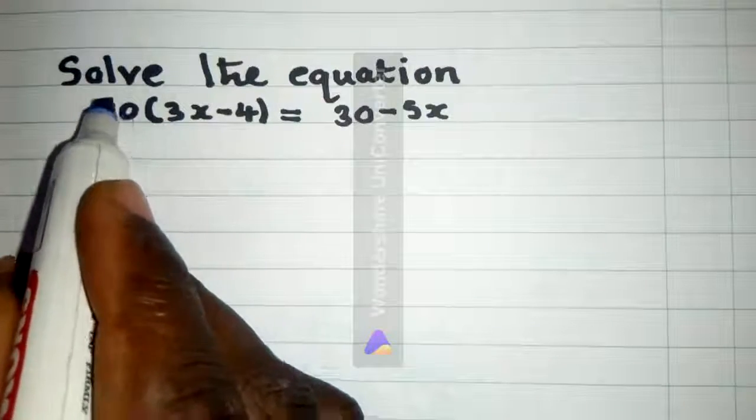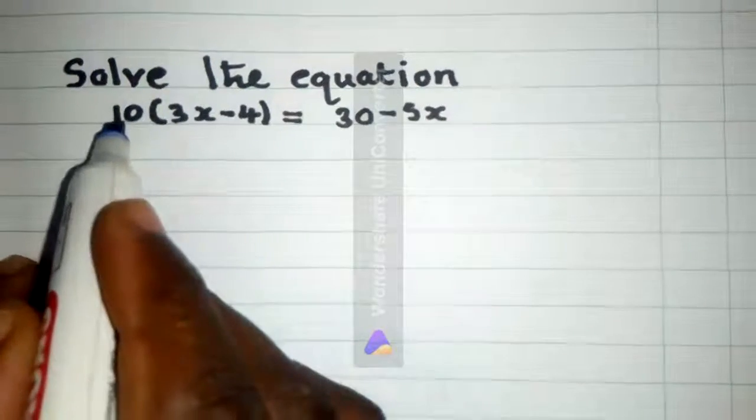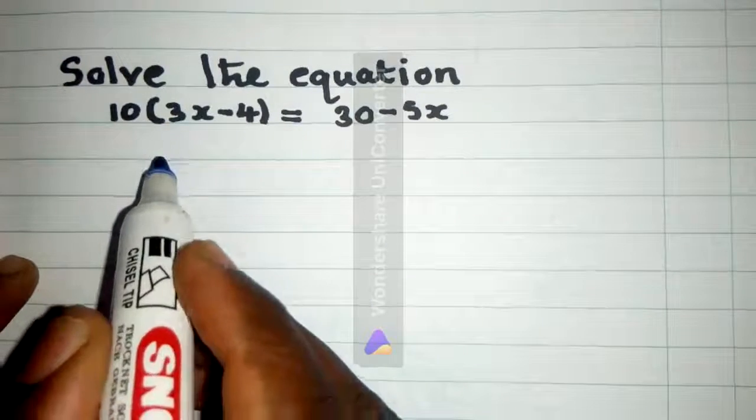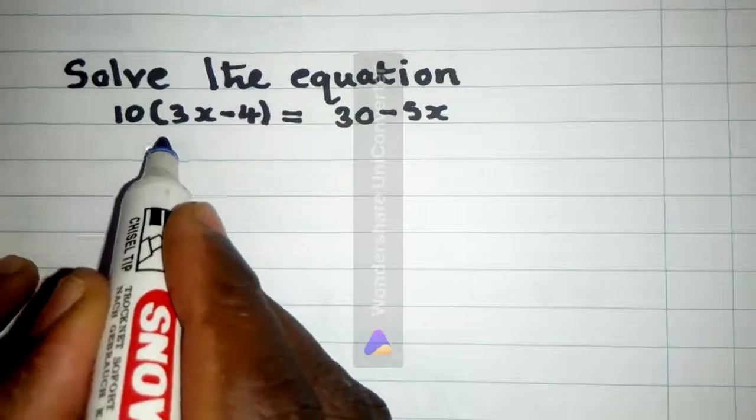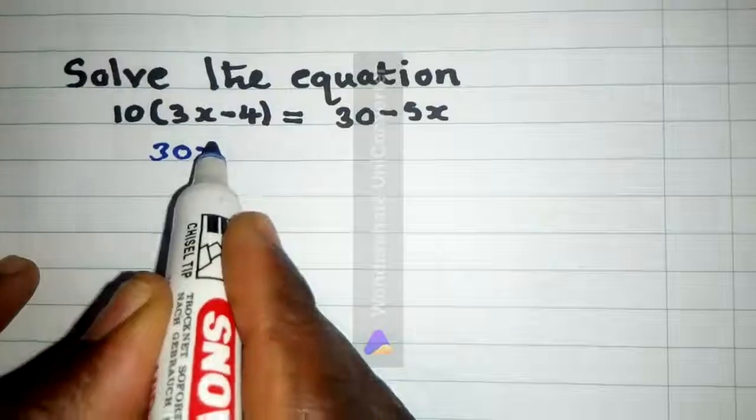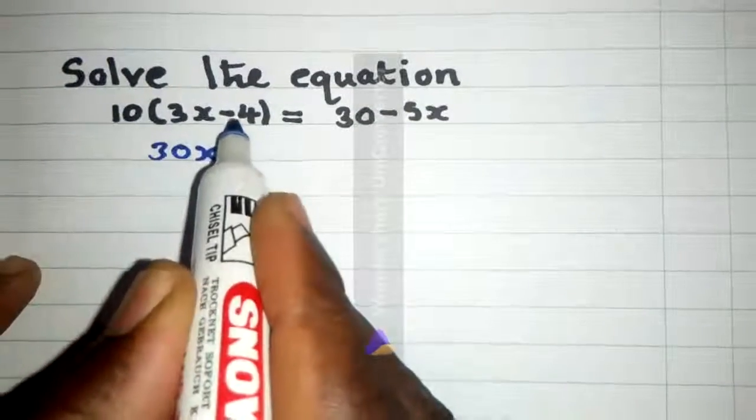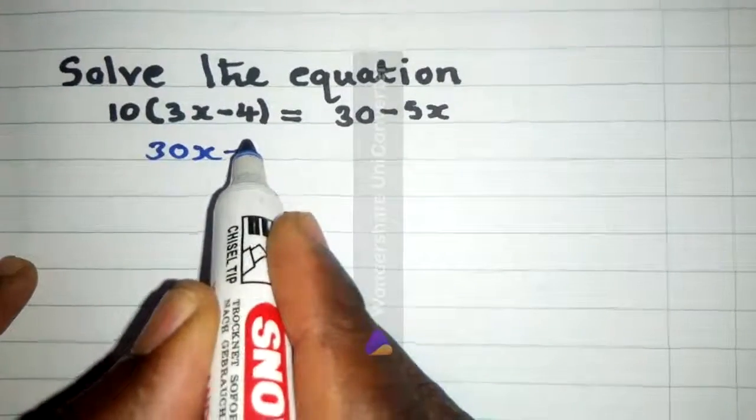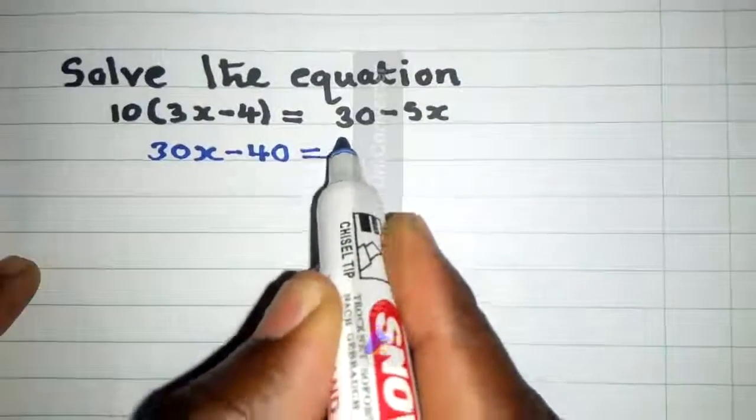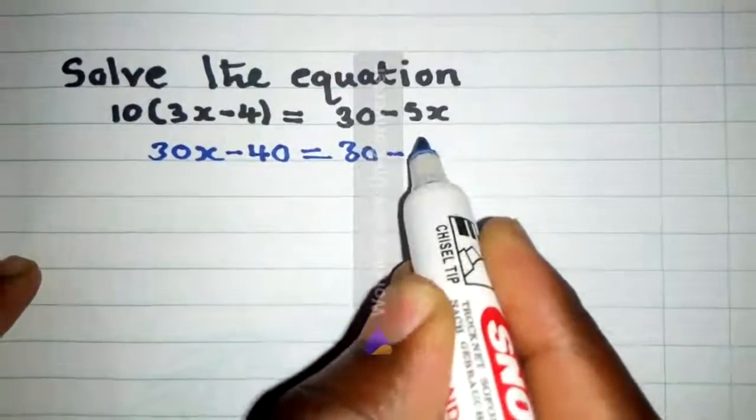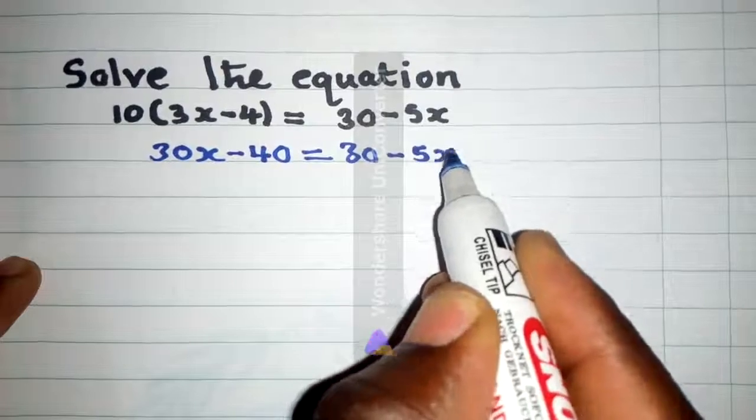We are going to get this 10 outside, multiplied by everything that is inside. So 10 by 3x, it's 30x. 10 multiplied by negative 4, it's negative 40, which is equal to 30 minus 5x.